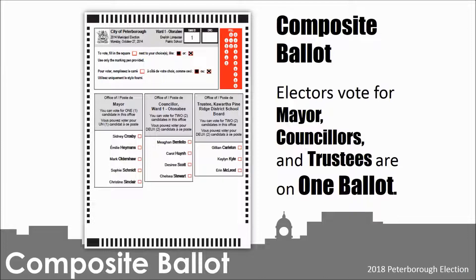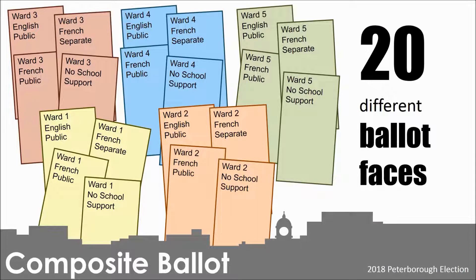A Ward 1 resident with no school support is also a possibility. As the Peterborough, Victoria, Northumberland, and Clarington Catholic District Board position has been acclaimed, English separate school board electors will receive a ballot with no school board section. As a result, an elector in the City of Peterborough could receive one of any 20 different ballot faces depending on their individual circumstances.